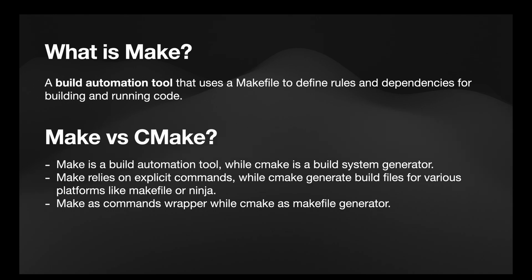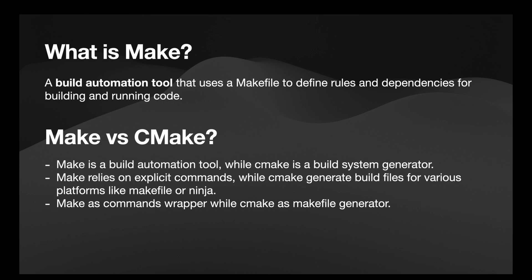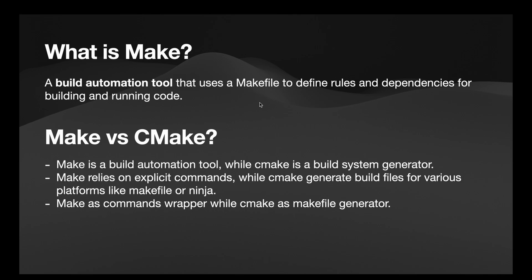In a few minutes we'll start writing the Makefile. But before we do that, let's have a brief overview of Make. What is the difference between Make and CMake? There's another tool called CMake that is vastly different from Make. Make is a build automation tool, while CMake is a build system generator. Basically, CMake builds the build system that is Make, and will allow you to create a Makefile automatically. This is the main difference between the two.